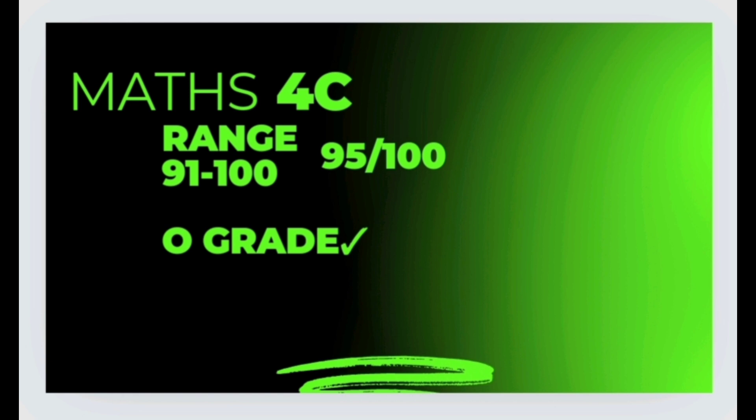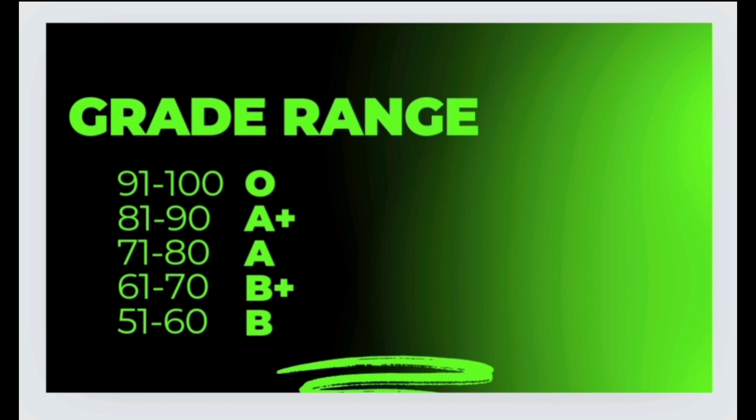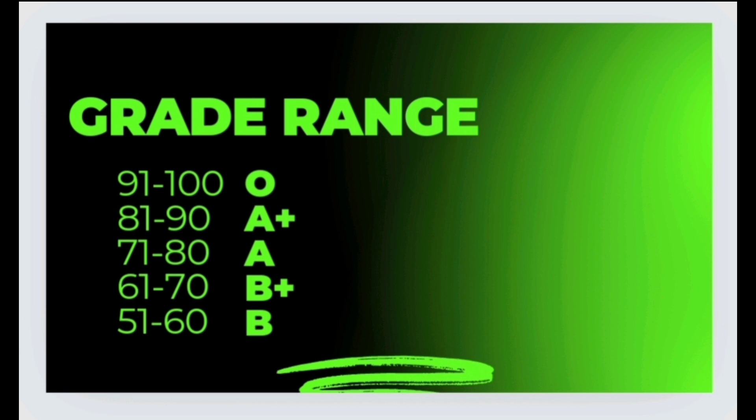How does this work? The maximum is 4 credits. If you score 100 marks, you get all 4 credits completely. In the grade range pattern: 91 to 100 is O, 81 to 90 is A+, and 71 to 80 is A — there is a 10-mark difference between each grade. So if you score 95, it falls under the O grade criteria.